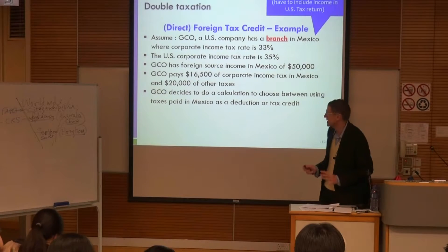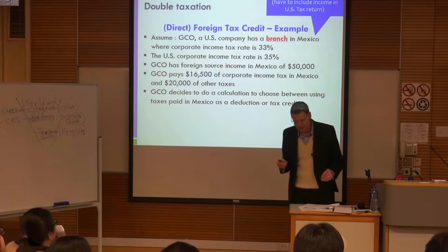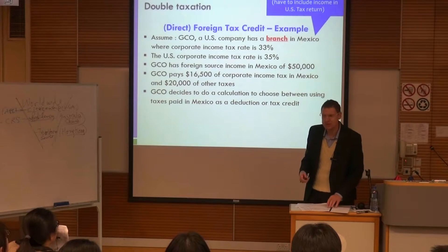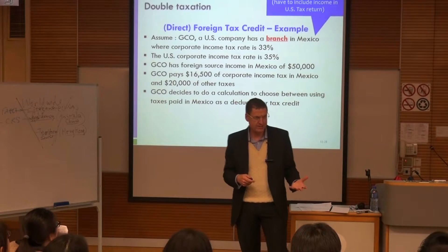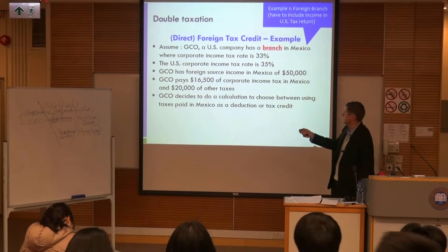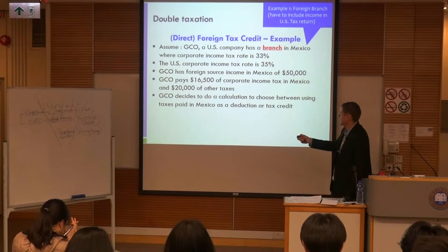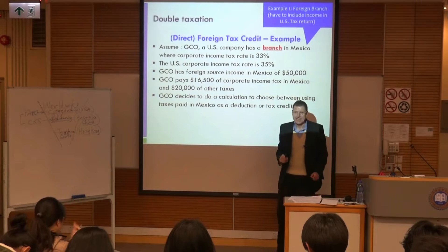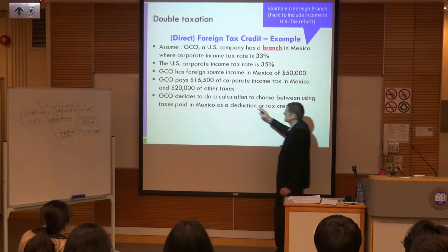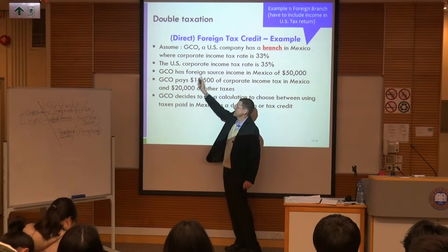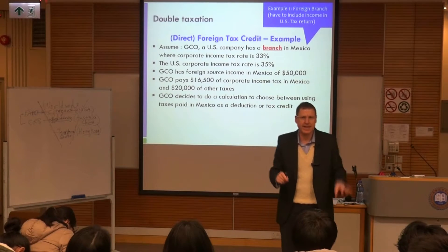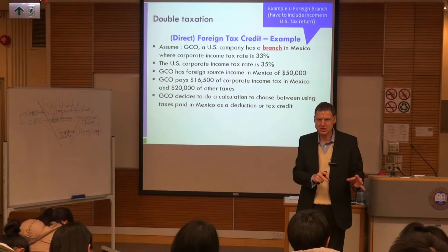GCO is a branch, so it's treated like an individual — no dividends involved. The Mexican rate is 33%, the US rate is 35%, and the foreign source income is $50,000. GCO pays $16,500 in corporate income tax and $20,000 in other taxes. With the foreign tax credit, you only get a credit for the $16,500 income tax paid — you do not get a credit for non-income taxes paid.